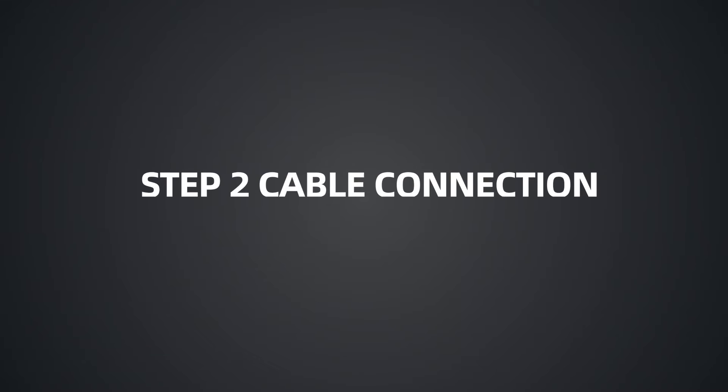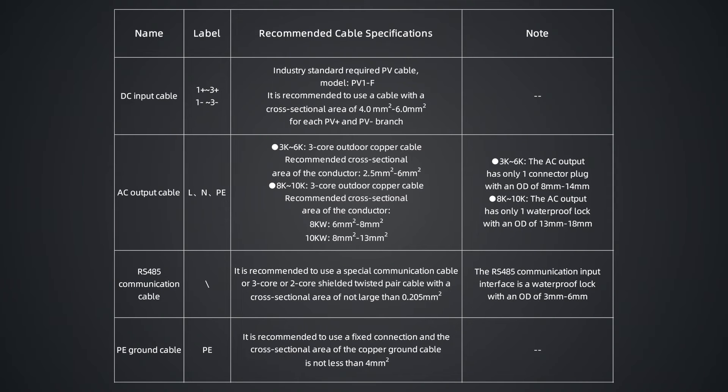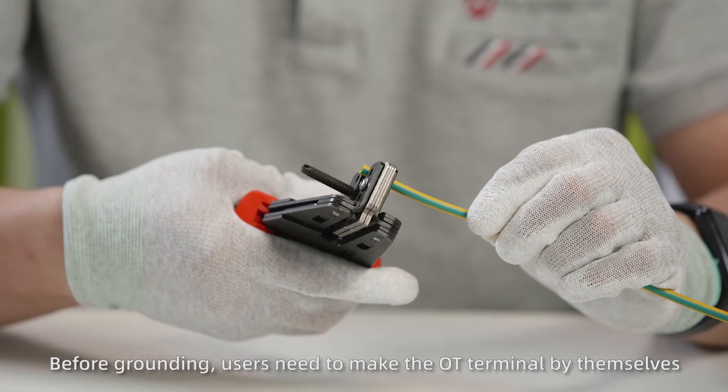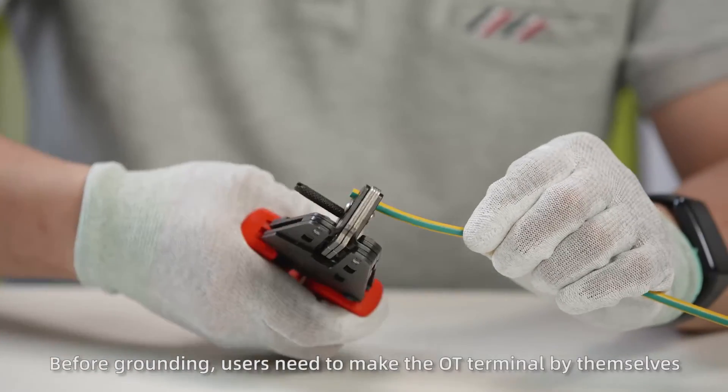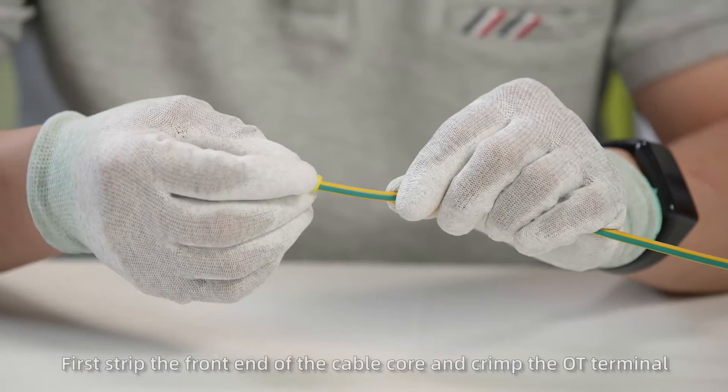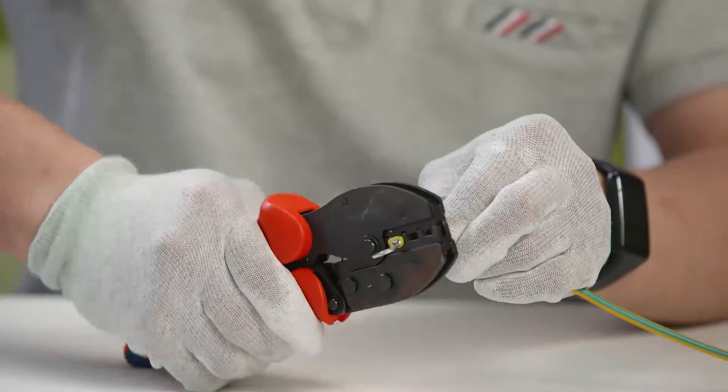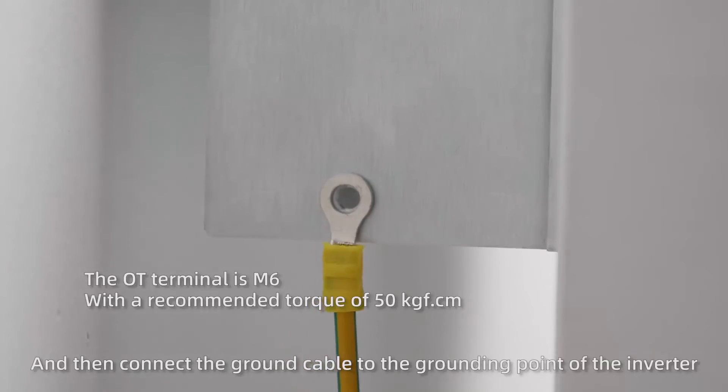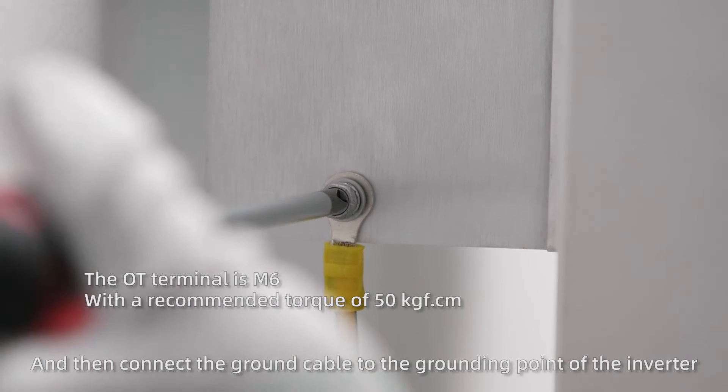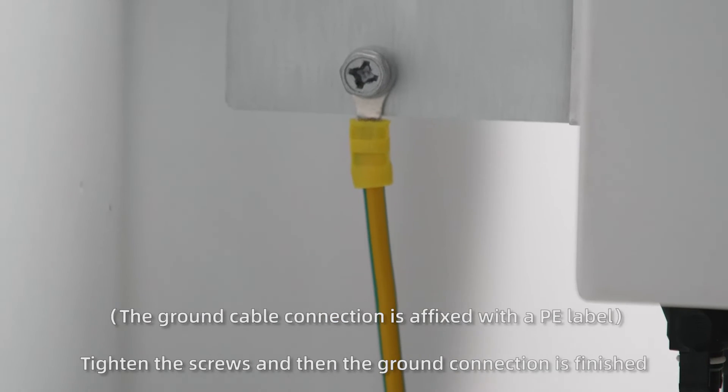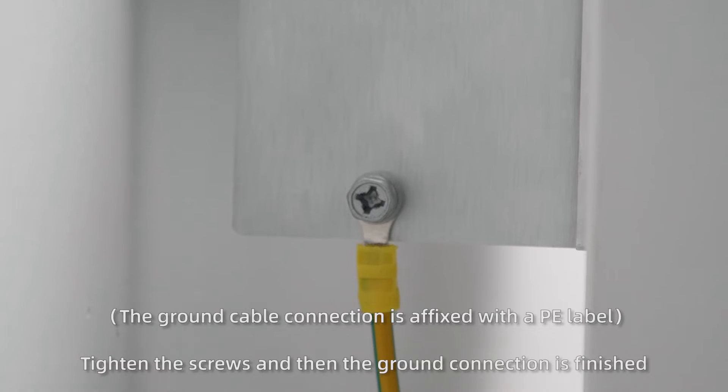Step 2 Cable Connection. First, connect the ground cable. Before grounding, users need to make the OT terminal by themselves. Strip the front end of the cable core and crimp the OT terminal. Then connect the ground cable to the grounding point of the inverter. Tighten the screws and the ground connection is finished.